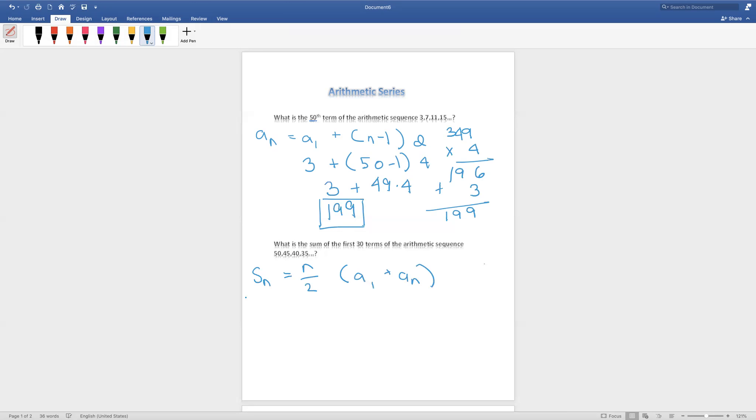n over 2 times a1 plus an. I'll tell you what these variables stand for. n stands for how many numbers there are. There are 30 terms. a1 stands for the first term. And an stands for the last term. To solve this, first we need to find out what the last term is. Let's fill in the things we know and then we'll find that.